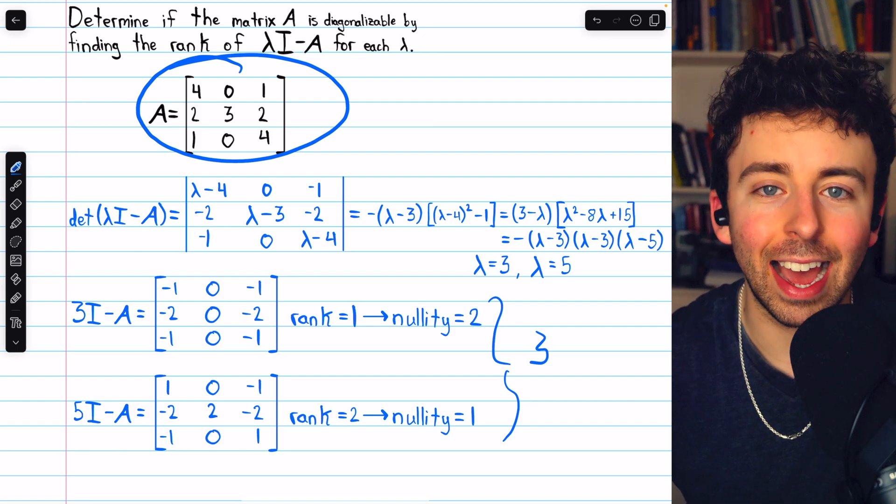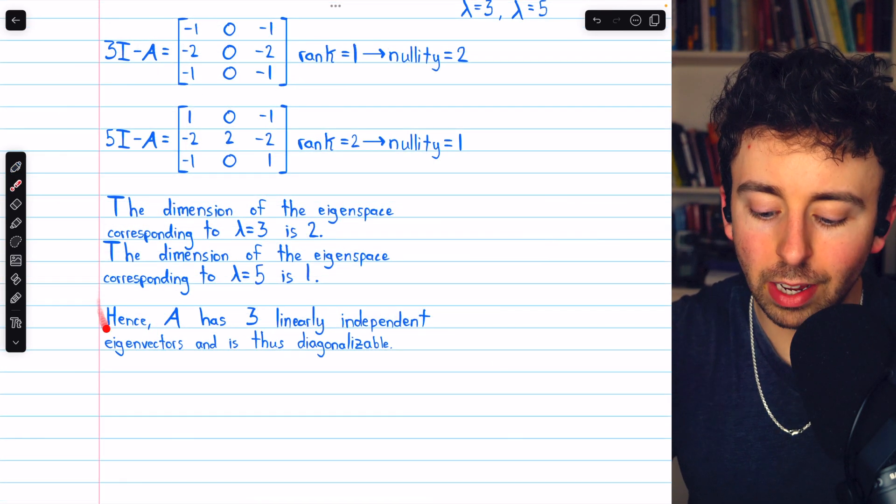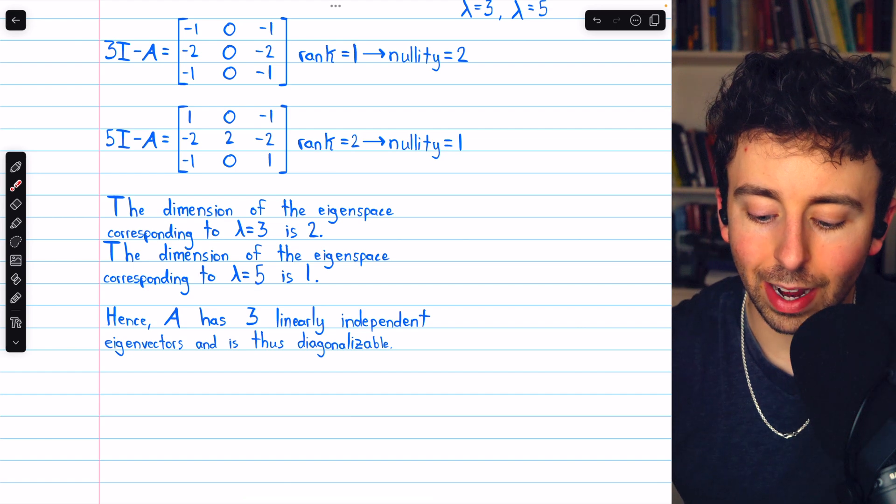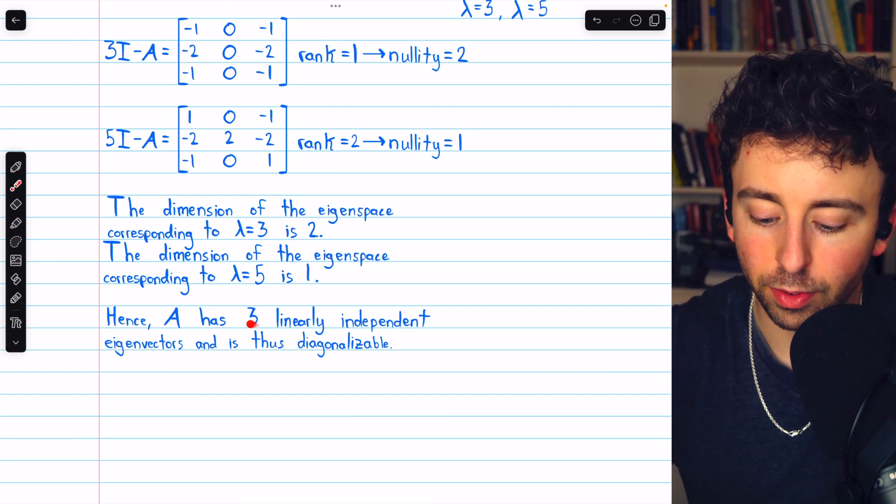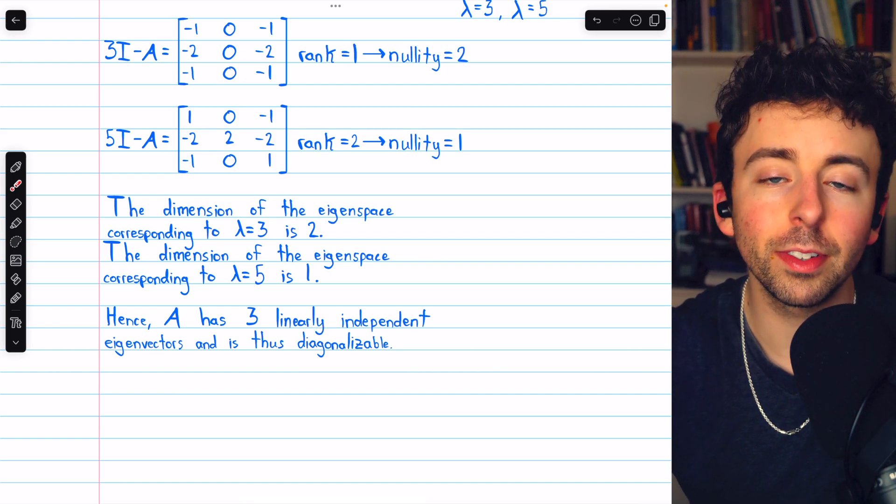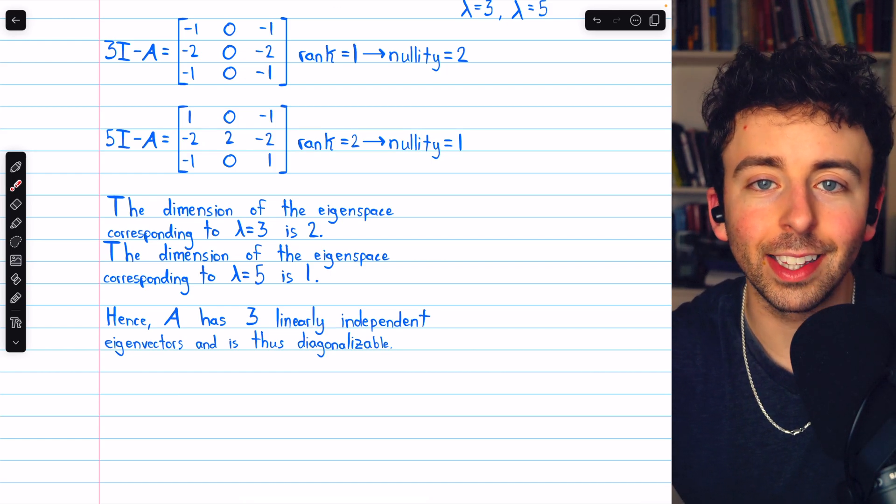Hence, this is a diagonalizable matrix. And there's our conclusion. We have two eigenvectors for one eigenspace, one eigenvector for the other eigenspace. So in total, three linearly independent eigenvectors, hence the matrix is diagonalizable.